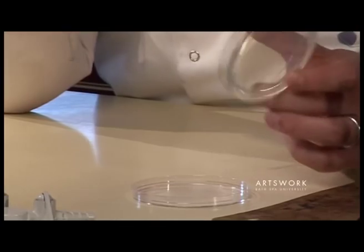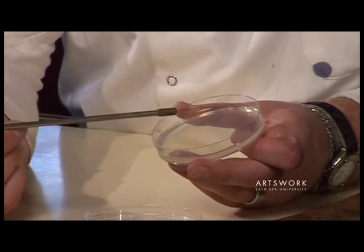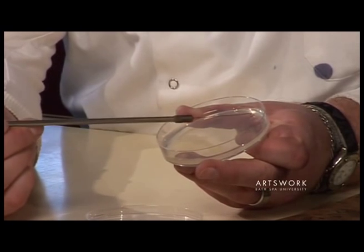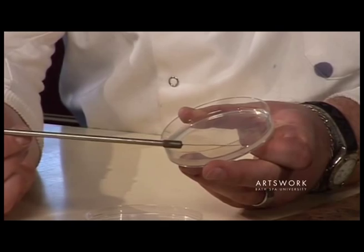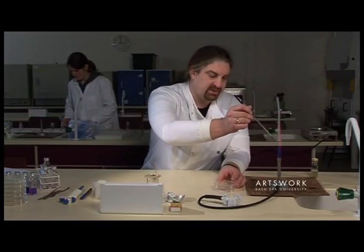Once the loop is cool, turn the plate back over and find the original spot. Using very little pressure, streak out four or five times from that original spot across the plate.